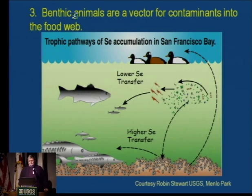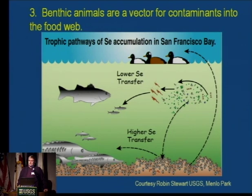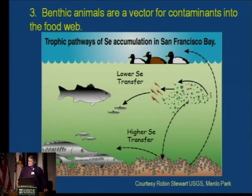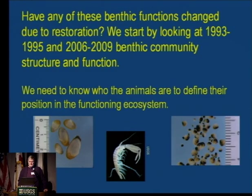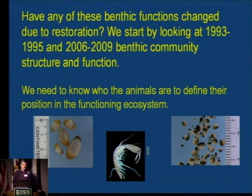A third function less frequently commented on is that benthic animals are vectors for contaminants. We've used benthic animals over the decades to monitor contaminants in systems because they stay in one spot and are good integrators of what's happened over their lifetime. Whatever they're accumulating is moving into the trophic system. Our main purpose in this study is to look at whether benthic functions have changed pre and post restoration.